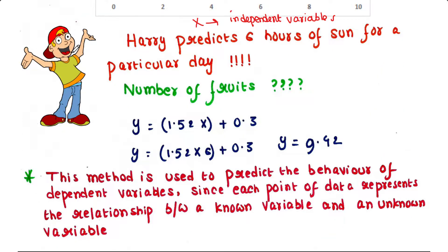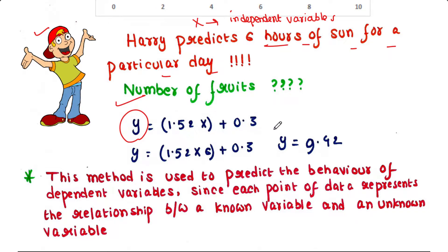One more thing we can calculate: suppose Harry predicts six hours of sun for a particular day. He can calculate the number of fruits using the formula y = 1.52x + 0.3. Here x is 6, so y equals 9.42. This method is used to predict the behavior of dependent variables.